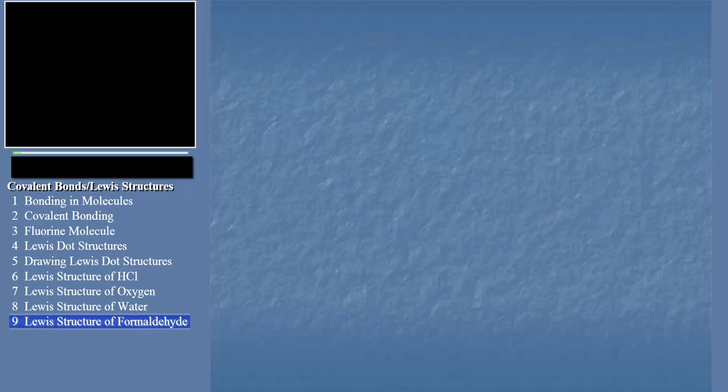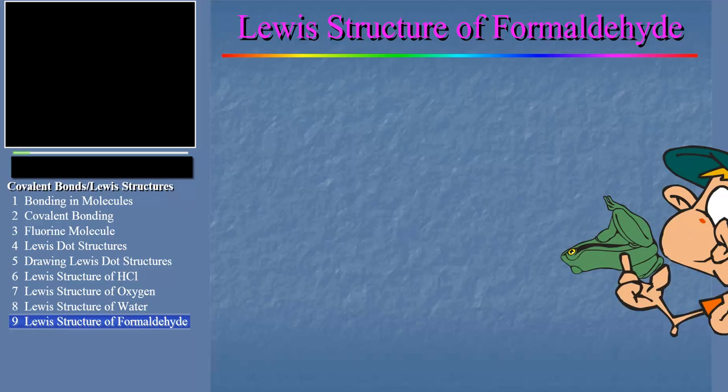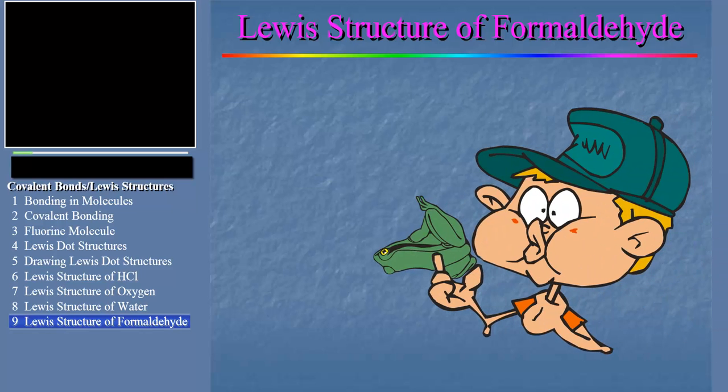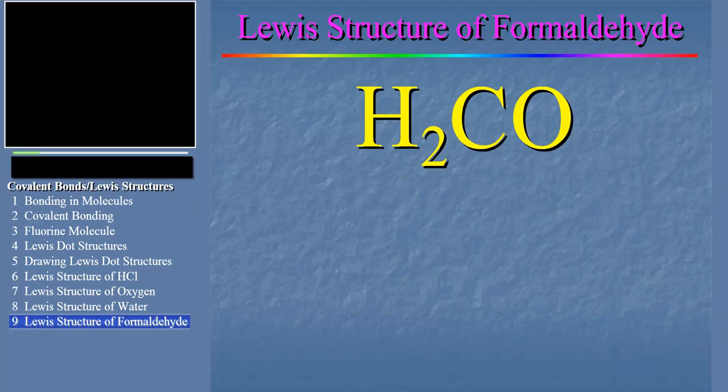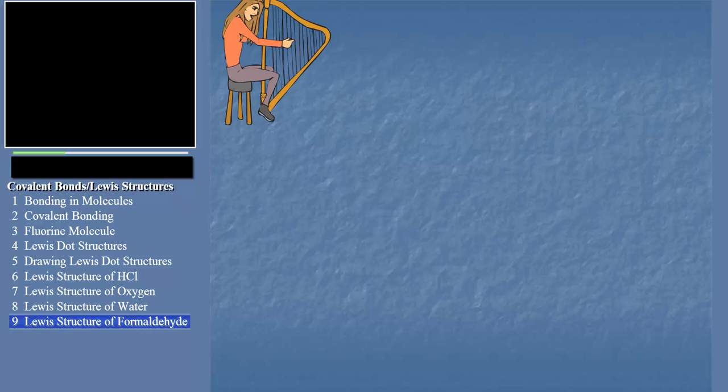Great. Now as our last example, let's do the Lewis dot structure of formaldehyde. That's the liquid they store those dead frogs in you dissected in high school biology. Here's the molecule's formula. And here's a hint. The hydrogen atom and oxygen atom are all bonded to the central carbon atom. Now again, hit pause and give it a try. This time we're going to show you the whole process to music. Hit it, maestro.